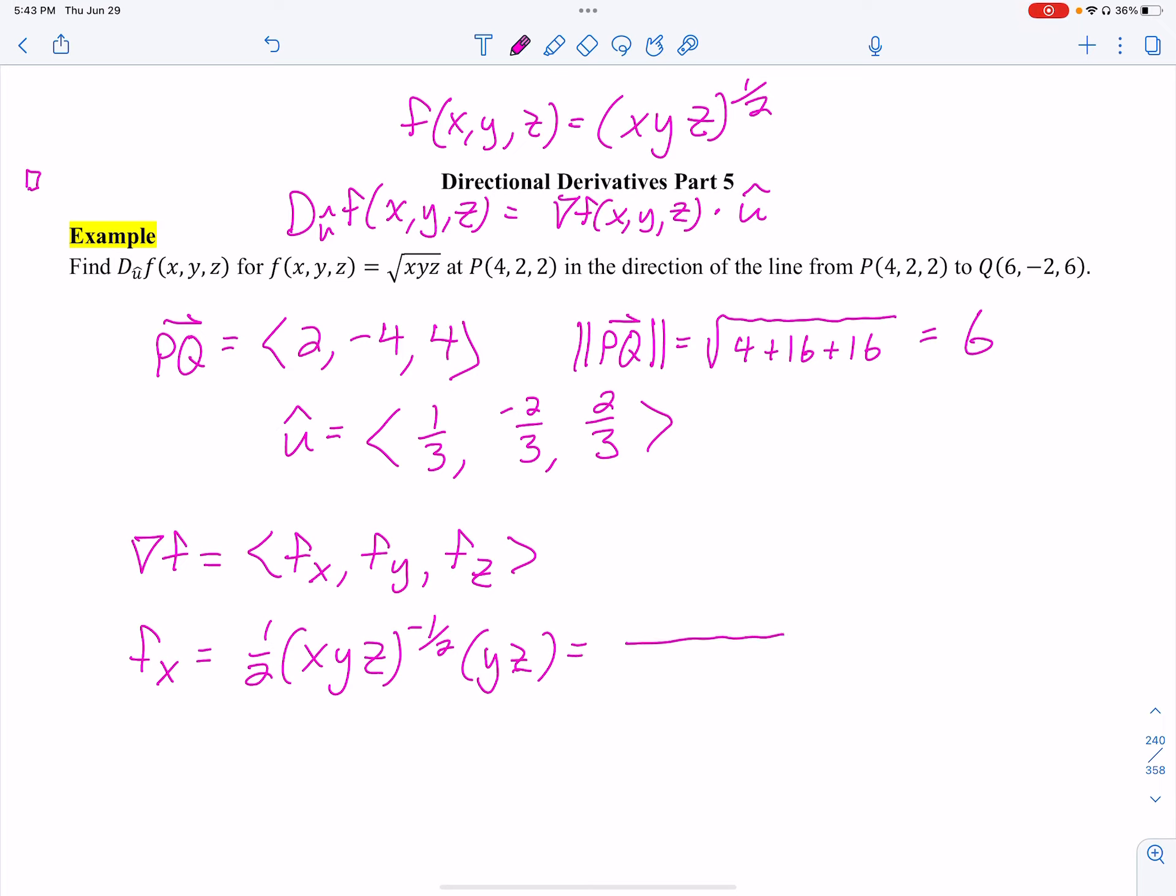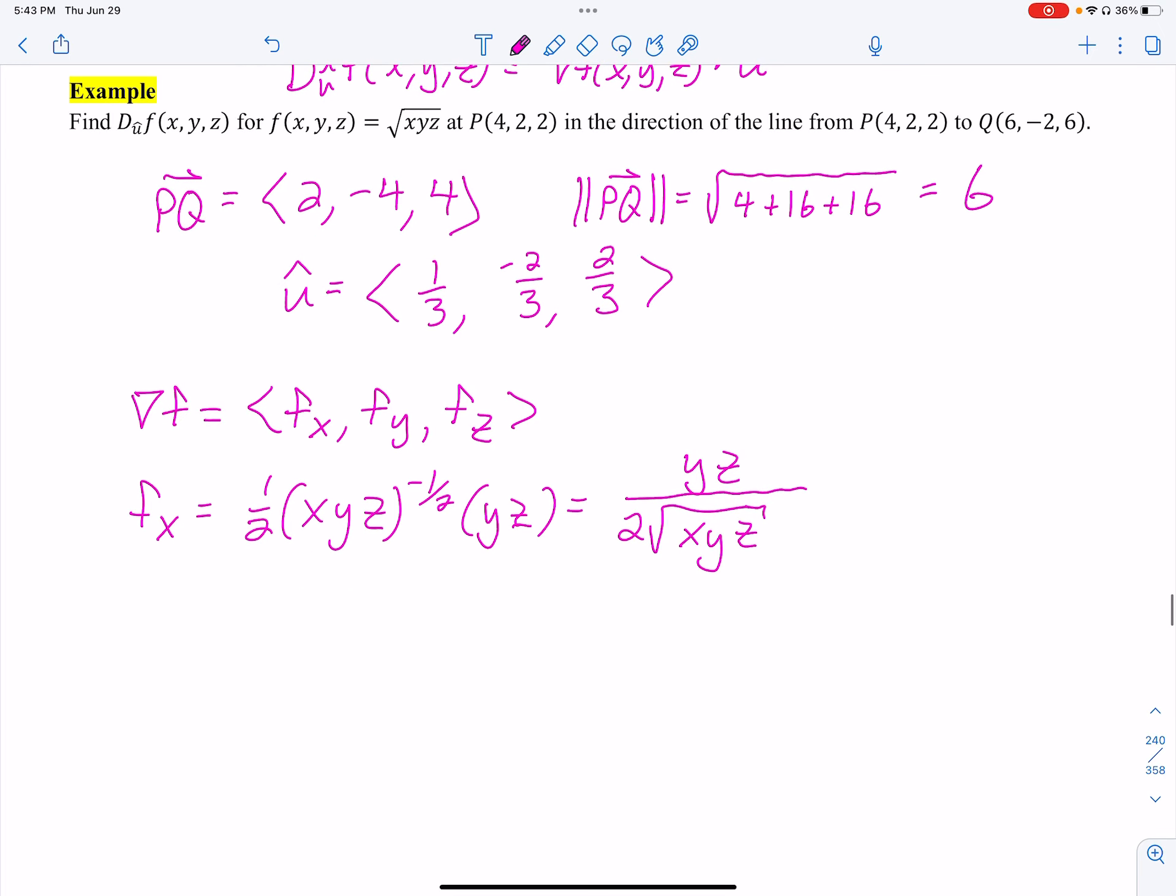Right, so that gets me yz over the square root, two times the square root, xyz. I'm going to use symmetry for the other three parts. You can see that we just have, on top, we will just have the other two variables. So this is going to be xz over two square roots of xyz. That's due to symmetry.